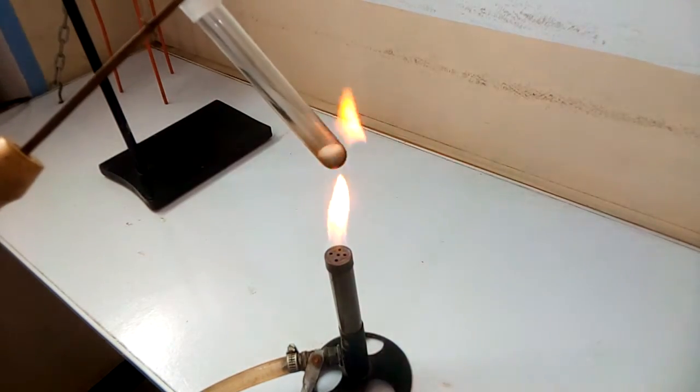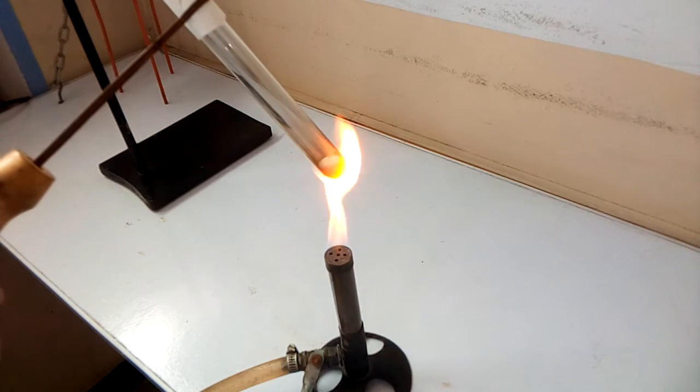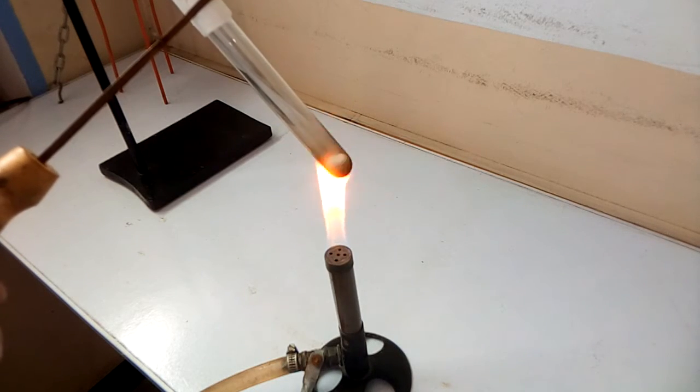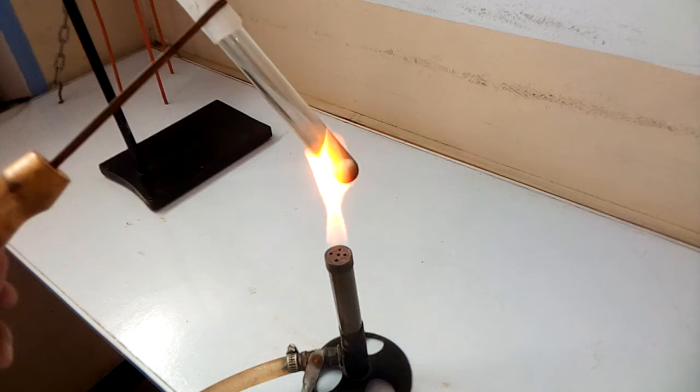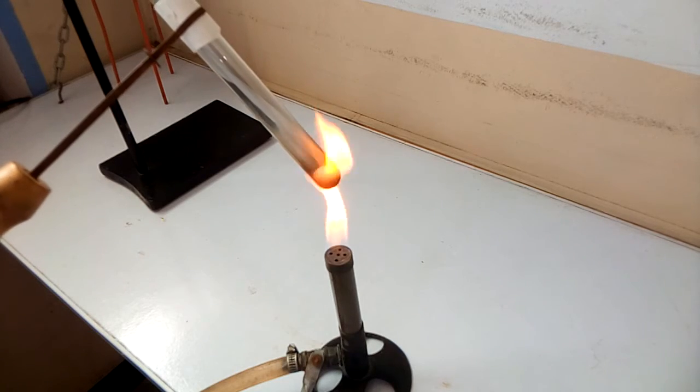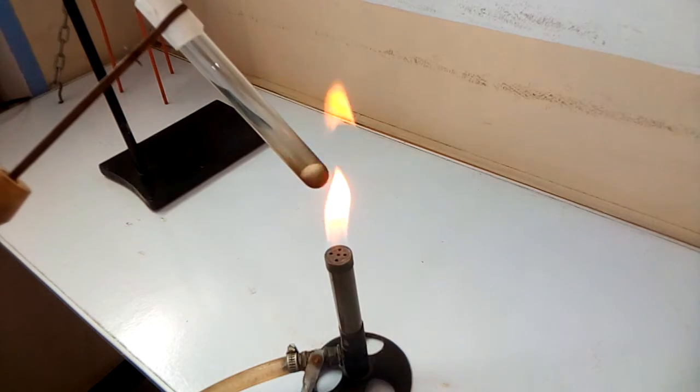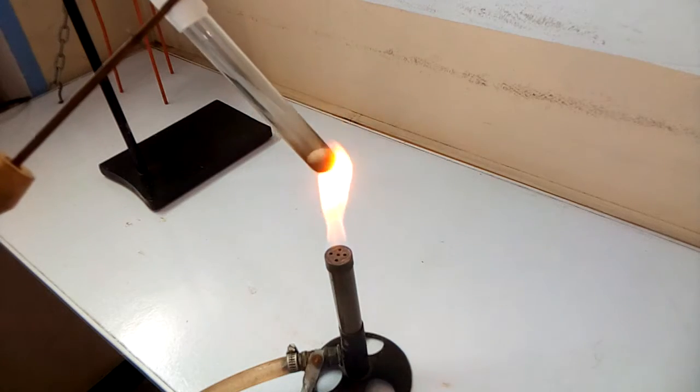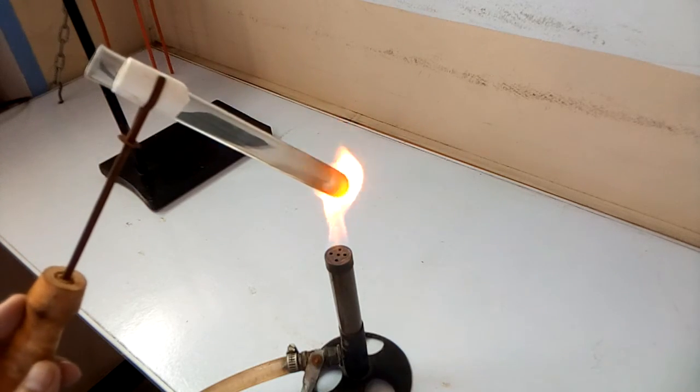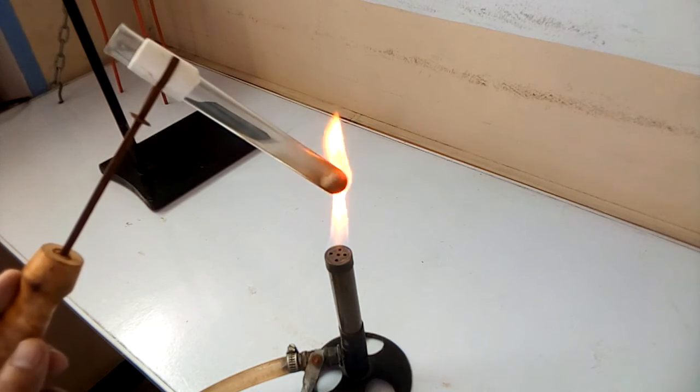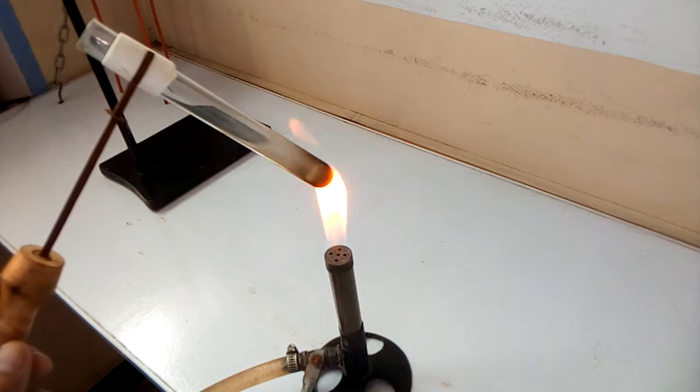You will see that ammonium chlorite will sublime in the form of white fumes and will solidify on the cooler end of the test tube near the wrapped filter paper, or you can wrap it with cotton also.